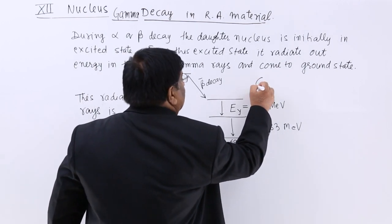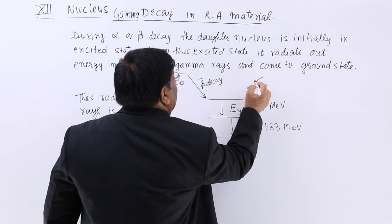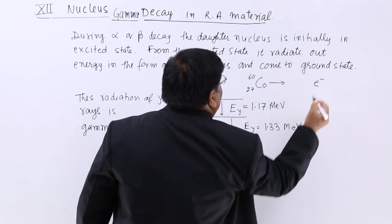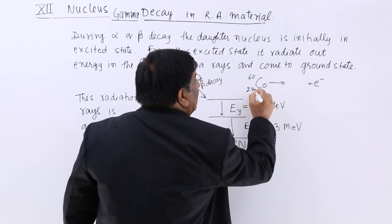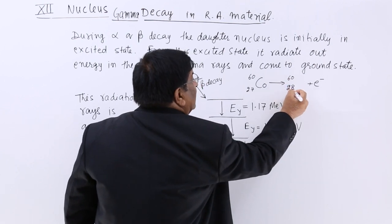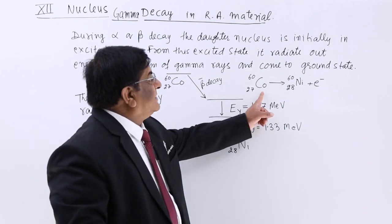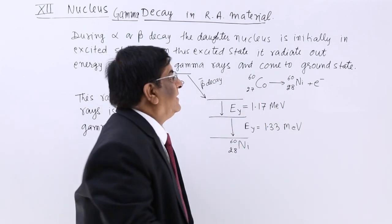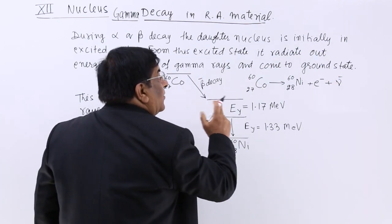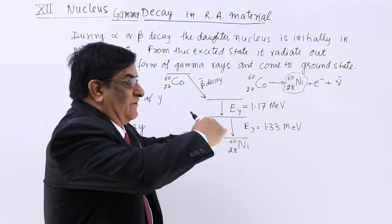So what is our process? Our process is cobalt. So cobalt is converted into nickel plus antineutrino that is there. Now this nickel which is produced, it has different levels of energy.